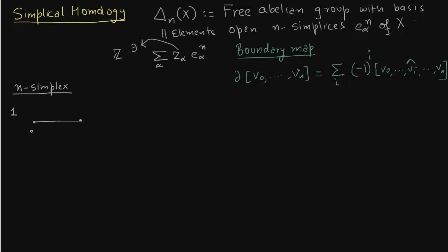Now the boundary of edge is nothing but two vertices v0 and v1. We draw arrow from the lower index to higher index. So 0 is lower than 1.